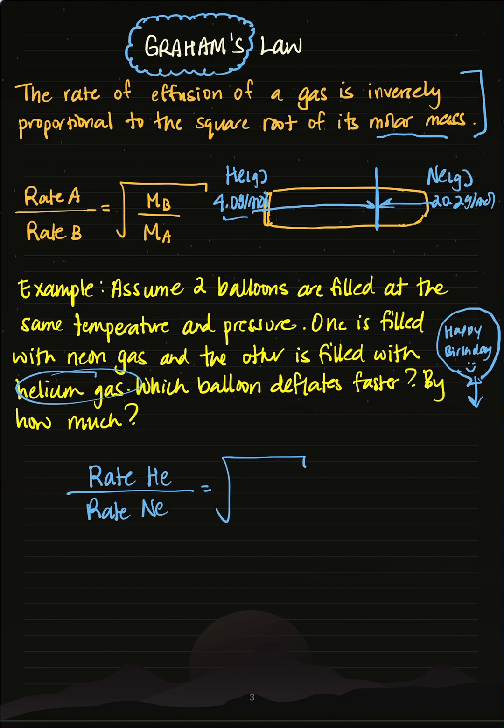So we're going to plug it into this formula to prove it. Let's call the A variable helium, and we'll call gas B neon. According to the formula, it's inversely proportional to the square root of the molar masses, so we'll call the B variable neon and the A variable helium.